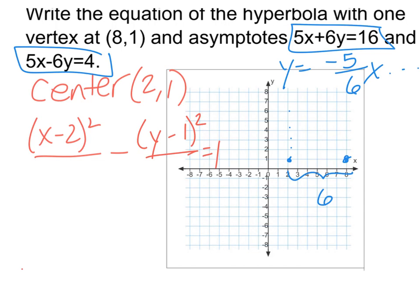So I'm moving 6 units this way, and I'm moving 5 units that way. So that means this becomes a 36, and this becomes a 25.